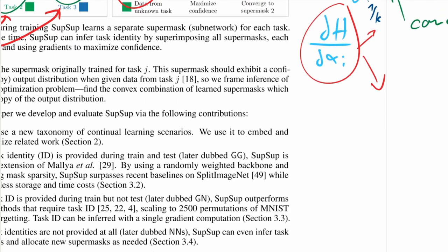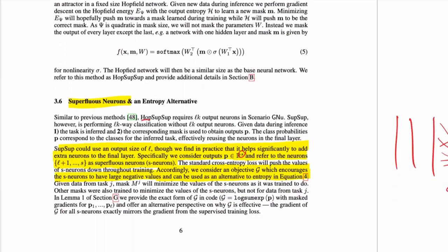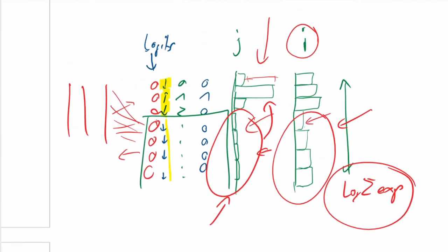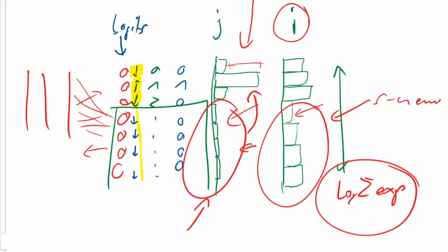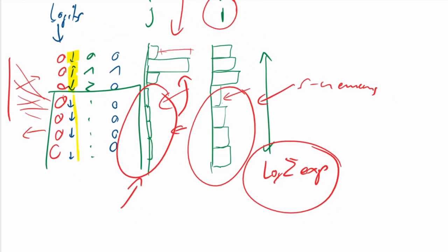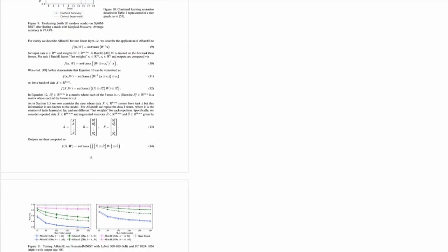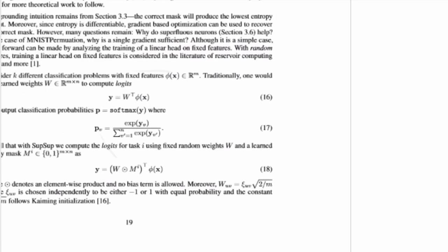Instead of the entropy, they have this other objective they call G. G looks at the superfluous neurons — these S neurons they add. The G objective only looks at the S neurons to decide whether that's the correct task, and it's basically just the log-sum-exp of the S neurons. We had some intuition about them being outlier detectors, but there is an entire chapter in the appendix where the authors do a more in-depth theoretical analysis, which gave me a better intuition of what this G objective does.